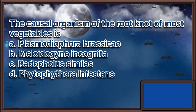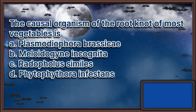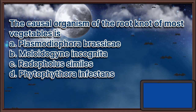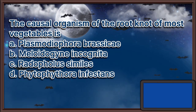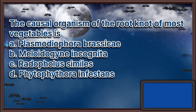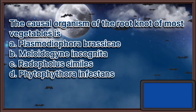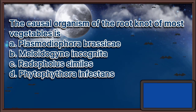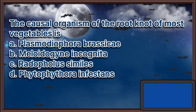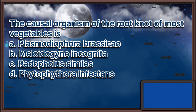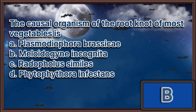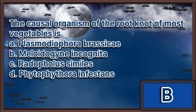The causal organism of the root knot of most vegetables is: A. Plasmodiophora brassicae, B. Meloidogyne incognita, C. Radopholus similis, D. Phytophthora infestans. The answer is letter B.